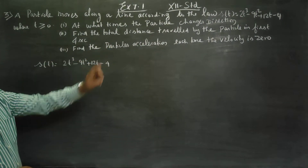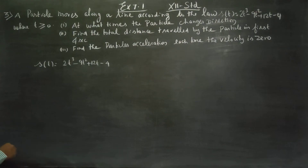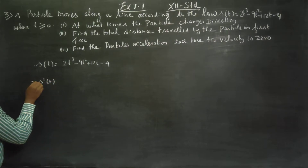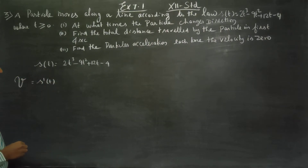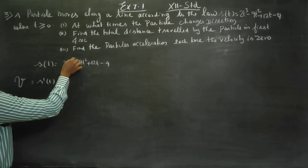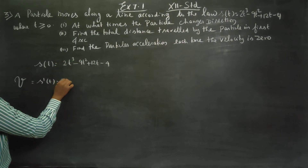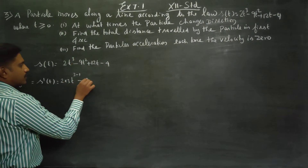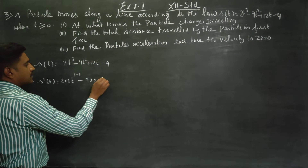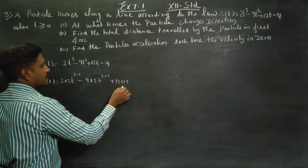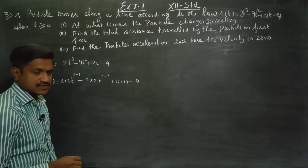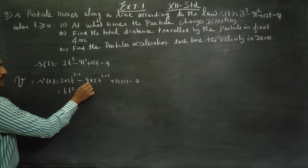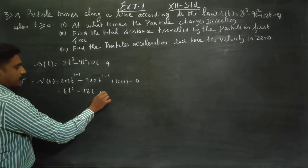At what time does the particle change direction? First of all, I will differentiate this. If I differentiate the distance, I will be getting the velocity. Differentiating: 2 into 3t squared minus 9 into 2t plus 24. The constant differentiates to 0. So we get 6t squared minus 18t plus 12.